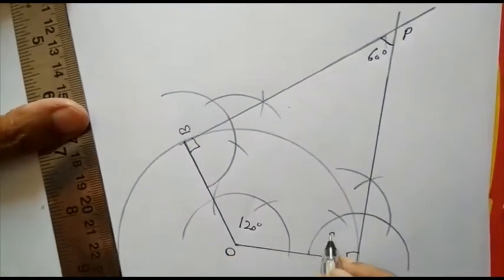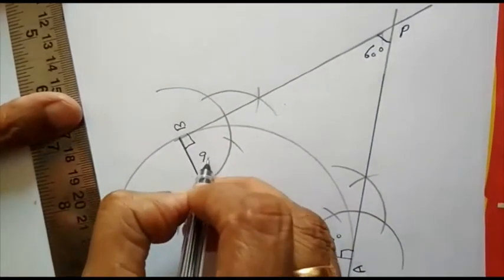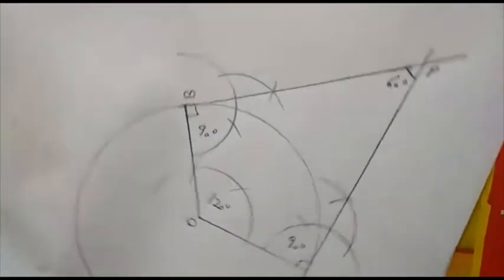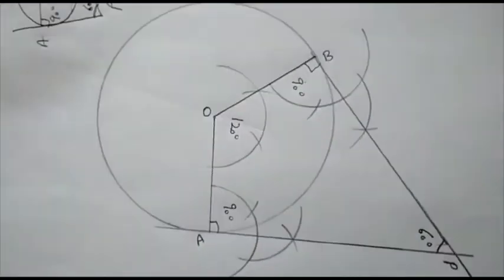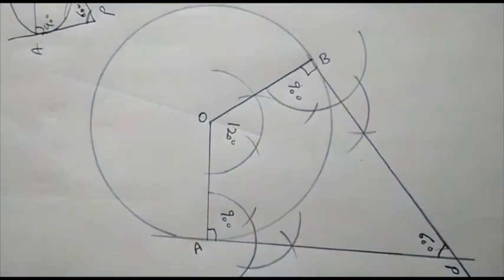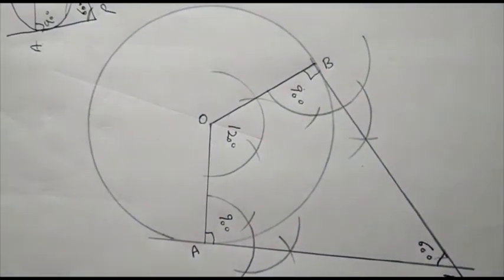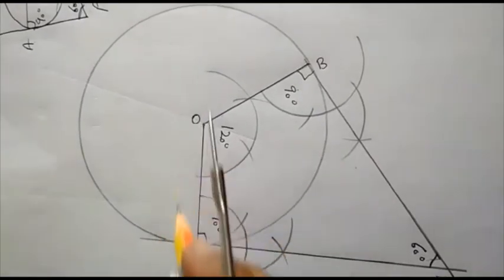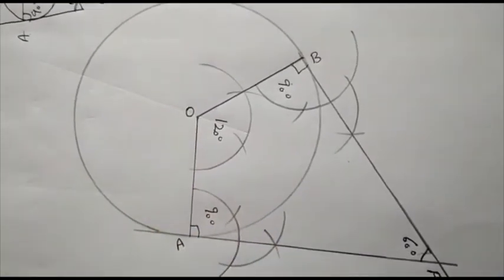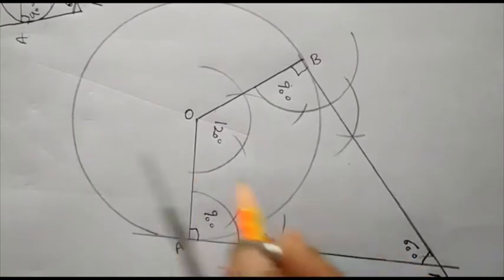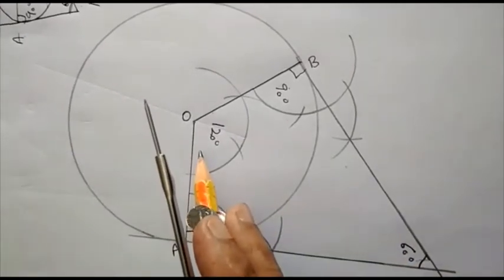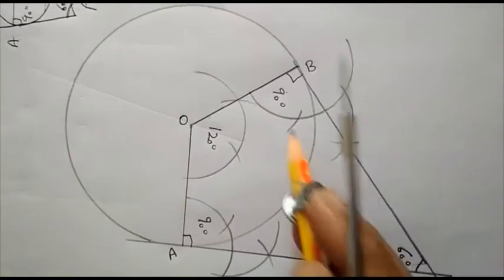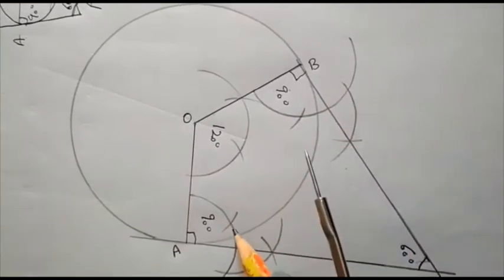So now we review it. First of all, we want to draw the tangents to a circle which are inclined at 60. I have drawn a circle with given center and given radius. Because tangents are inclined at 60, so at the center, I will make an angle of 120, 180 minus 60 because sum of these two angles will be 180.